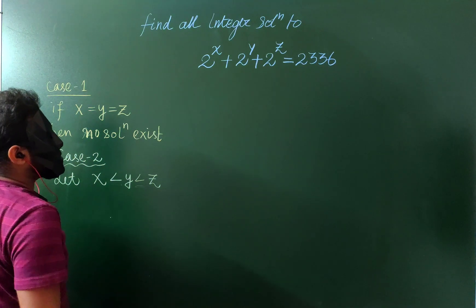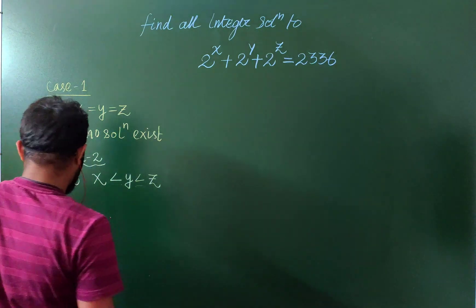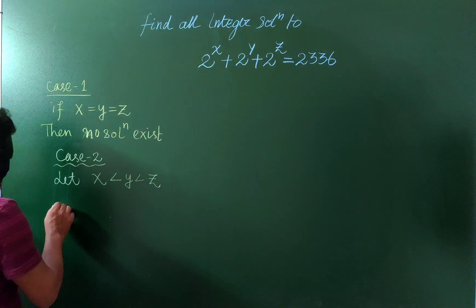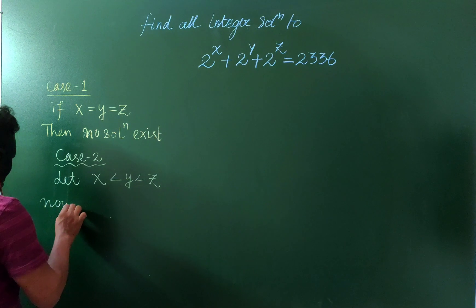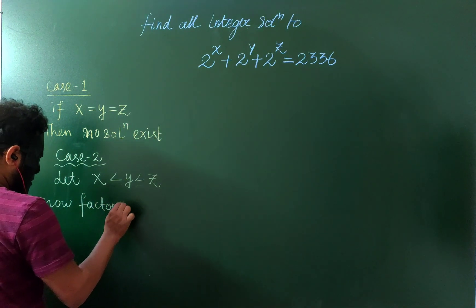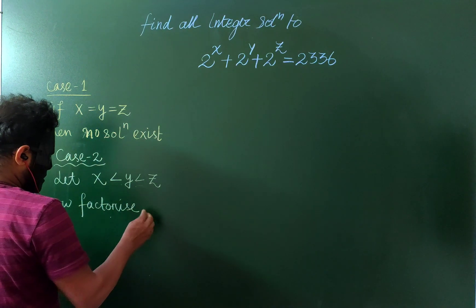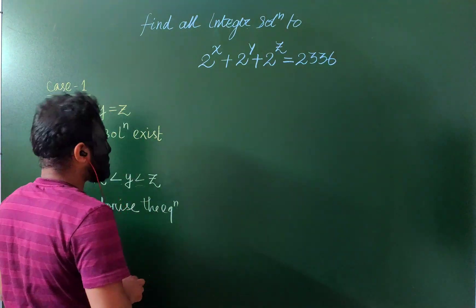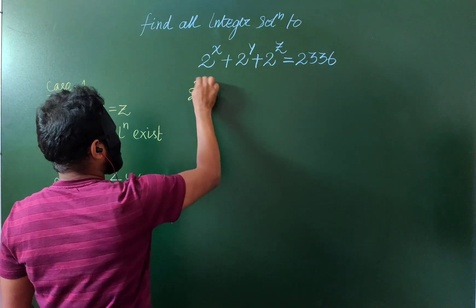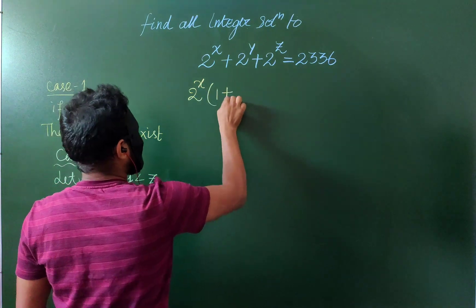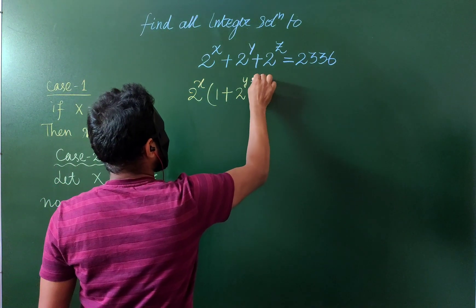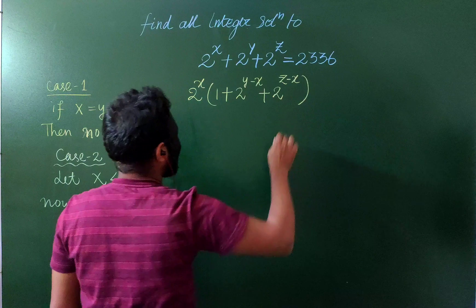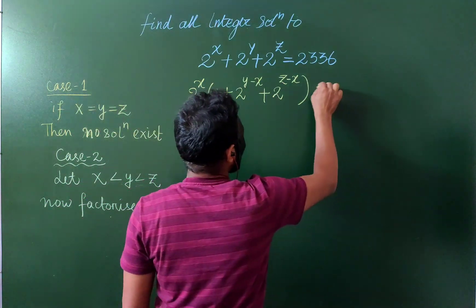We can take 2^x out, then 1 plus 2^(y-x) plus 2^(z-x) will be there, because 2^x is the smallest one. Factorizing this gives us 2^x times 73.